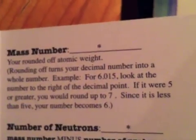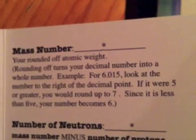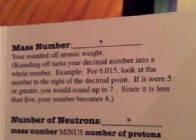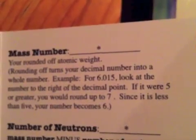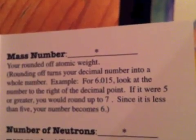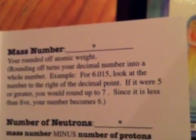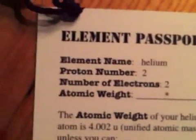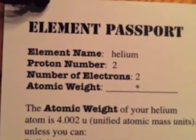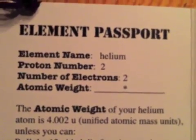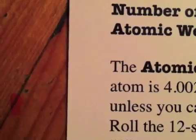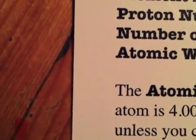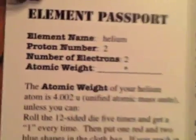On this side of the passport, it tells you how to figure out how many neutrons you get from your mass number. You round off your mass number to a whole number, and then you subtract the number of protons in your element. So, if the atomic weight of your helium is 4.002 and you round it off to 4, then if you subtract 2, your proton number from that, you get two neutrons.